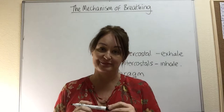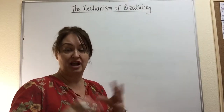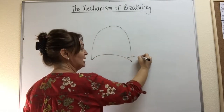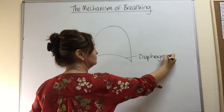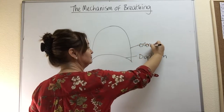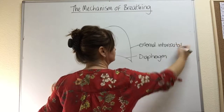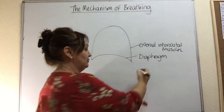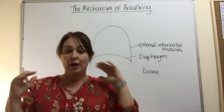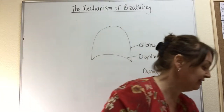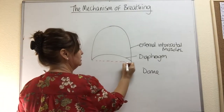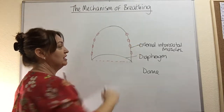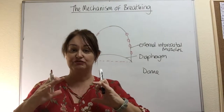Let's first think about inhaling. I'm going to represent the thorax, the thoracic region, as a kind of bell jar. This would be my diaphragm, and in here would be my external and internal intercostal muscles. When you inhale, your diaphragm — which is now a dome shape — contracts. When muscles contract, they shorten, so this dome shape now takes a flatter shape. Your external intercostal muscles, which are between your ribs, also contract, and that lifts the rib cage up and out.